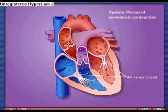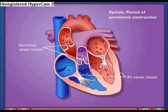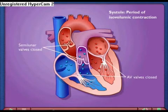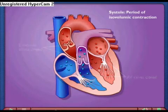The ventricle begins to contract, but the semilunar valve is still closed, thus pressure builds in the ventricle. As ventricular systole continues, pressure increases in the ventricle.